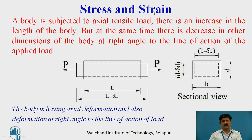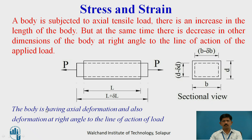Stress and strain. When a body is subjected to a tensile load P, there is an increase in the length of the body but at the same time there is a decrease in other dimensions. There is an increase in length of the bar by delta L, and in the other dimensions there is a decrease: D minus delta D and B minus delta B. The body has axial deformation and also deformation at right angle to the line of action of load.